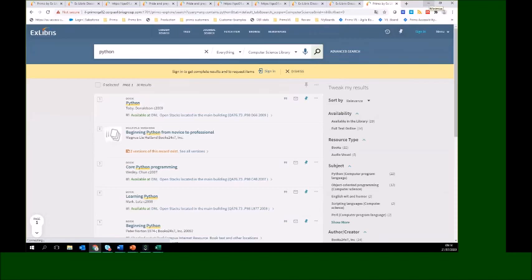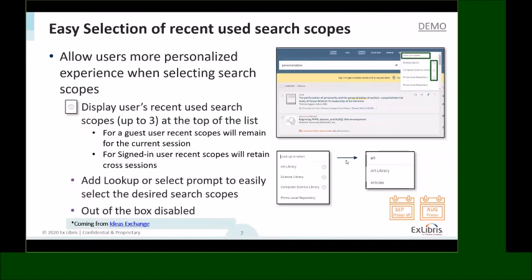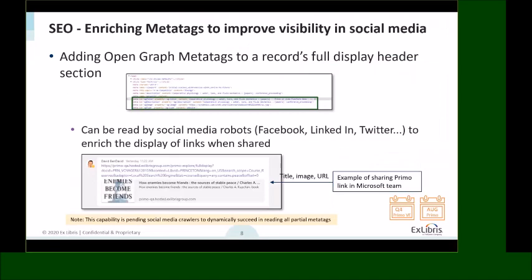Next is our ongoing effort to make Primo more visible on the web, aligned with standards — this falls under search engine optimization. The more meta tags we enrich, the more helpful it is for web crawlers to read better records from your discovery. Specifically, we added the Open Graph meta tags, which were declared by Facebook as a standard for sharing links with images, titles, and descriptions.